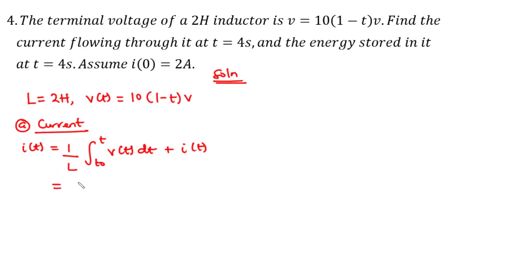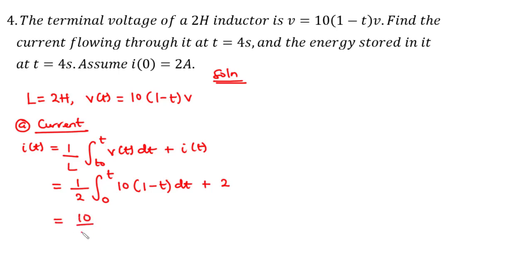So we have one over 2 times the integral from 0 to t of v(t), where v(t) = 10(1 − t) dt, plus the initial current of 2 amperes. Pulling out the constant 10, we get 10 divided by 2 equals 5 on the outside, times the integral from 0 to t of (1 − t) dt, plus 2.